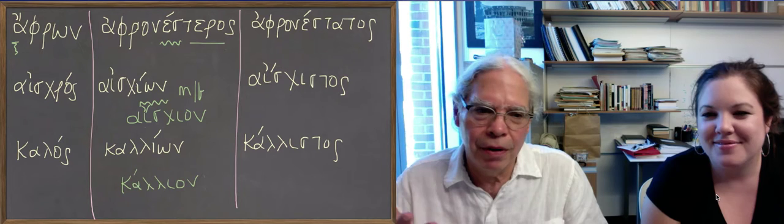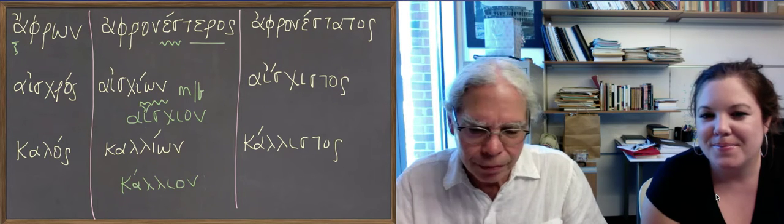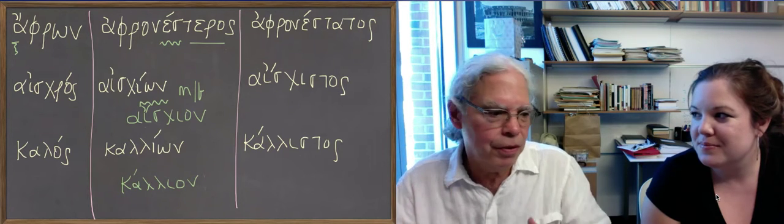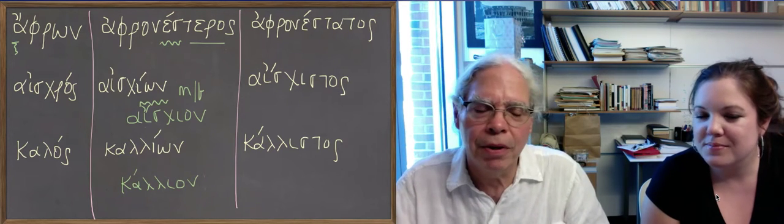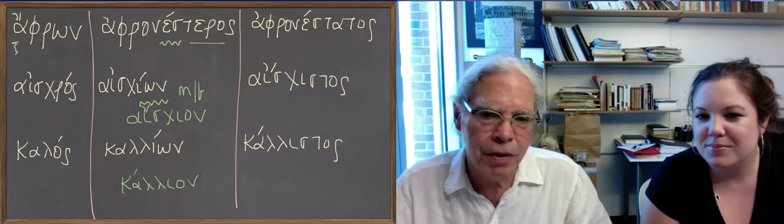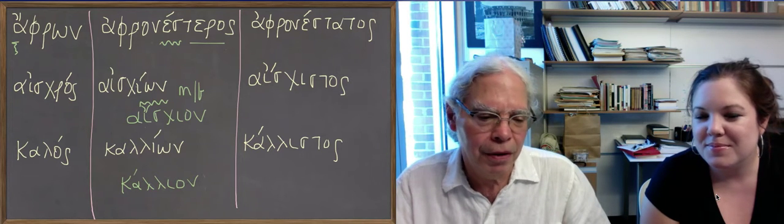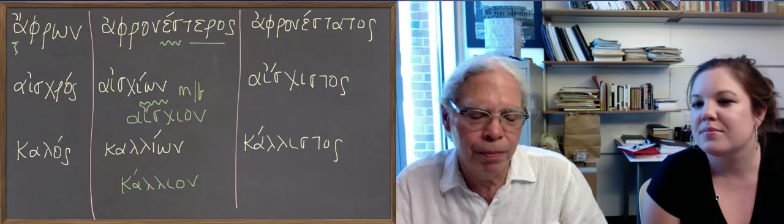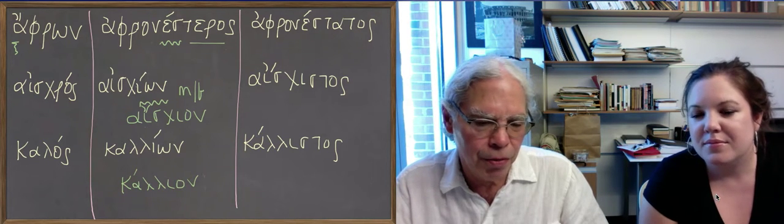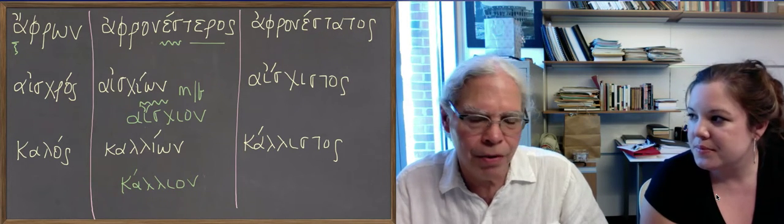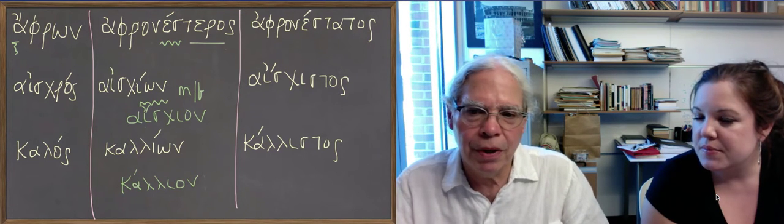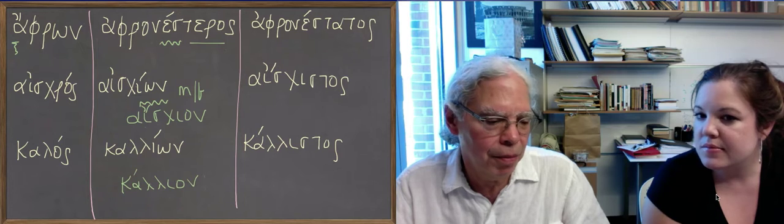But these forms are irregular in the sense that although they do follow rules within themselves, there's no sort of consistency between them and other forms in the language. So they've given you this much. There are a bunch of really basic words like the words for agathos, the word for good, kakos, the word for bad. They haven't taught you those comparatives and superlatives. They're doing them in another lesson. So we'll get to them later on.